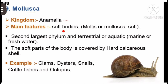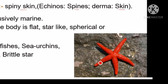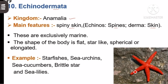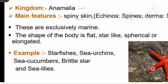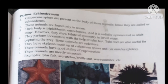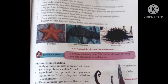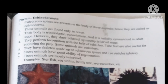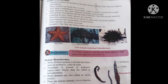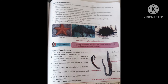The next phylum is Phylum Echinodermata. Characteristics: First, calcareous spines are present on the body of these animals. Second, these animals are found only in the sea. Third, their body is triploblastic. Fourth, they perform locomotion with the help of tube feet, which are also used for capturing prey. Fifth, they have a skeleton made up of calcareous spines. Sixth, these animals have good ability of regeneration and are mostly unisexual. For example: starfish, sea urchin, brittle star, sea cucumber, etc.